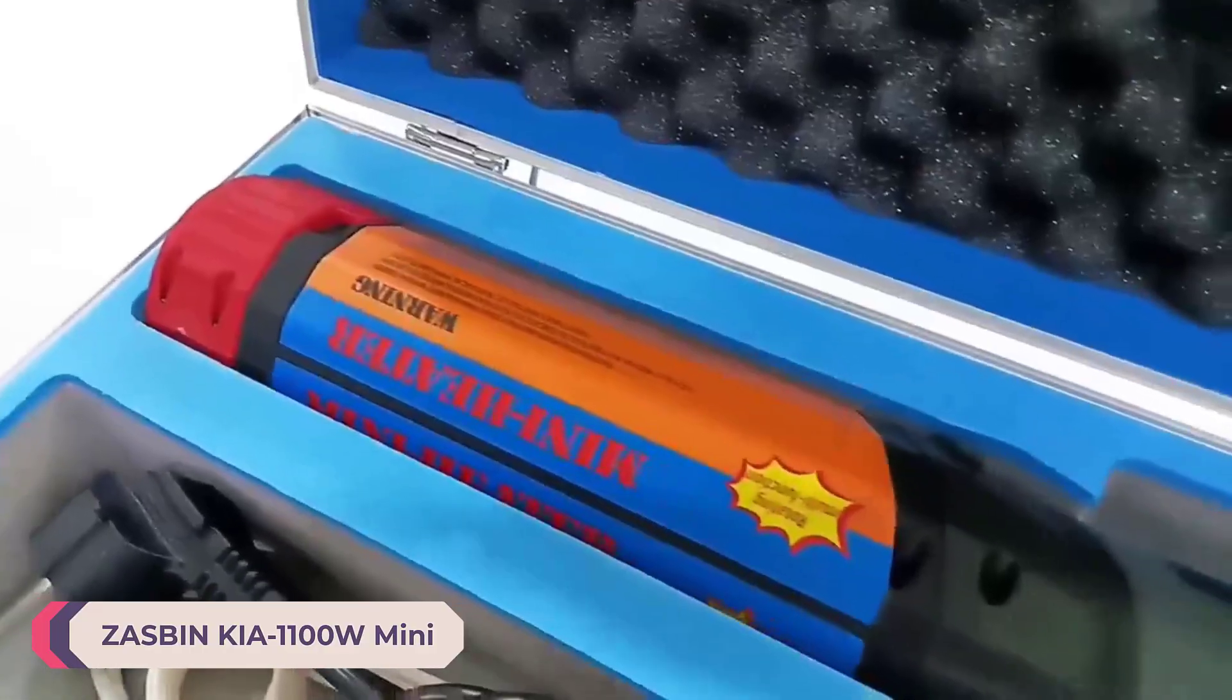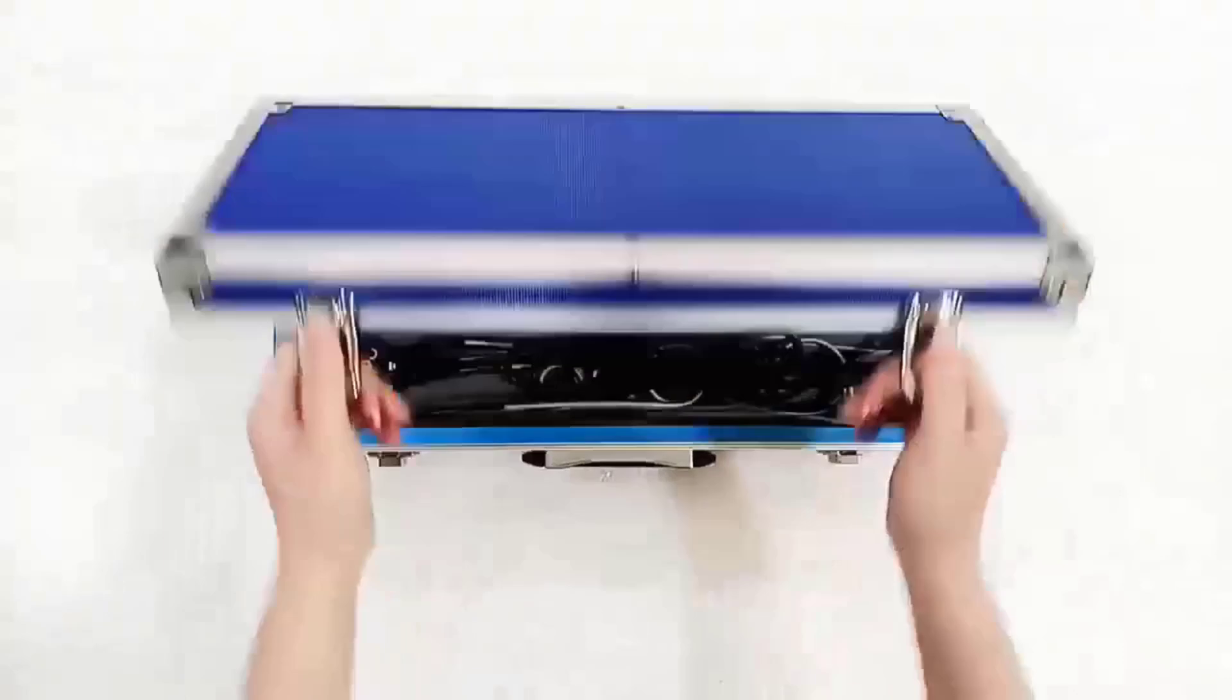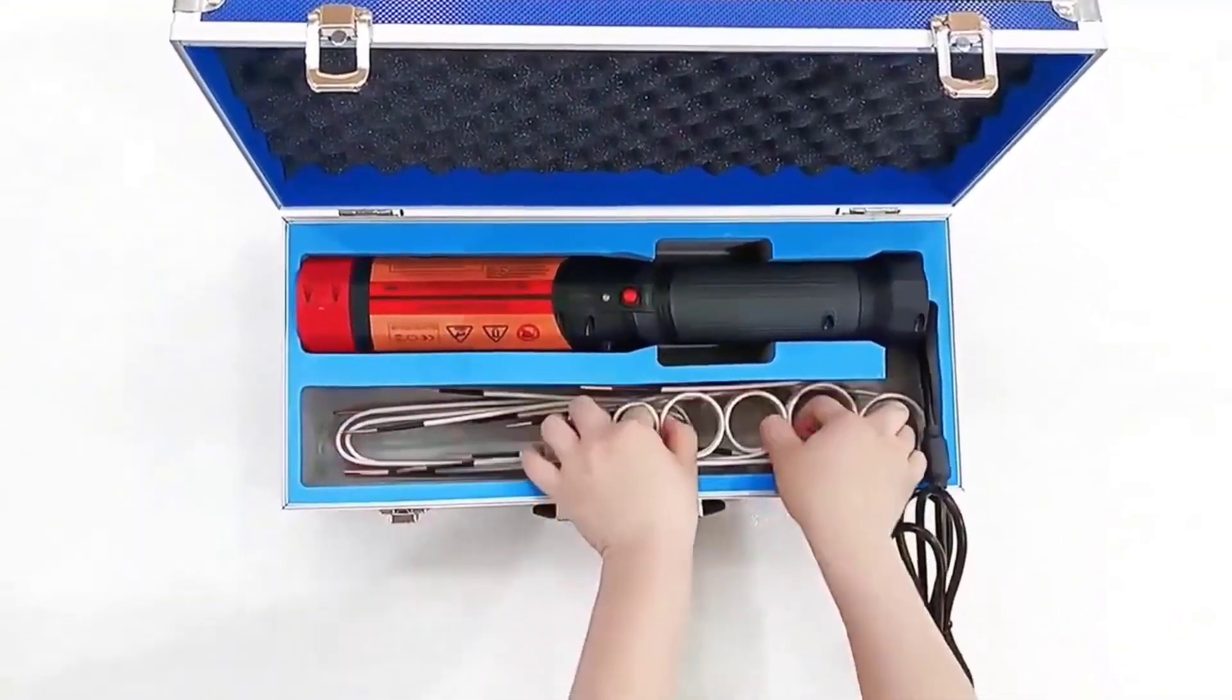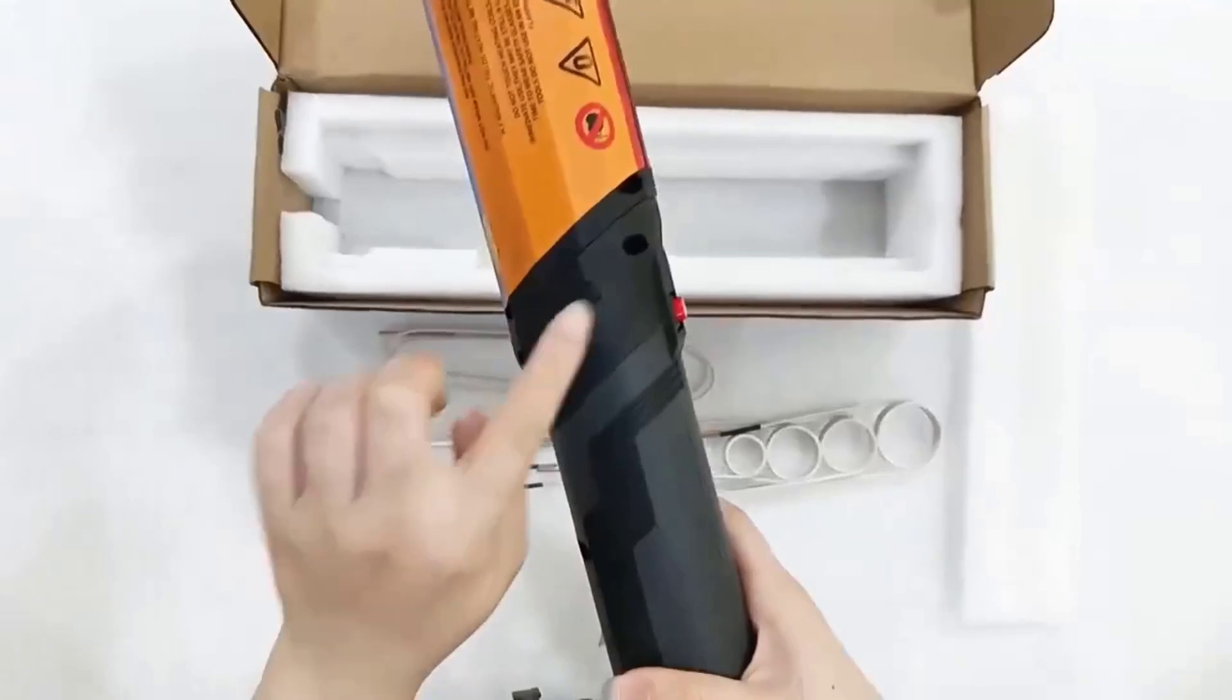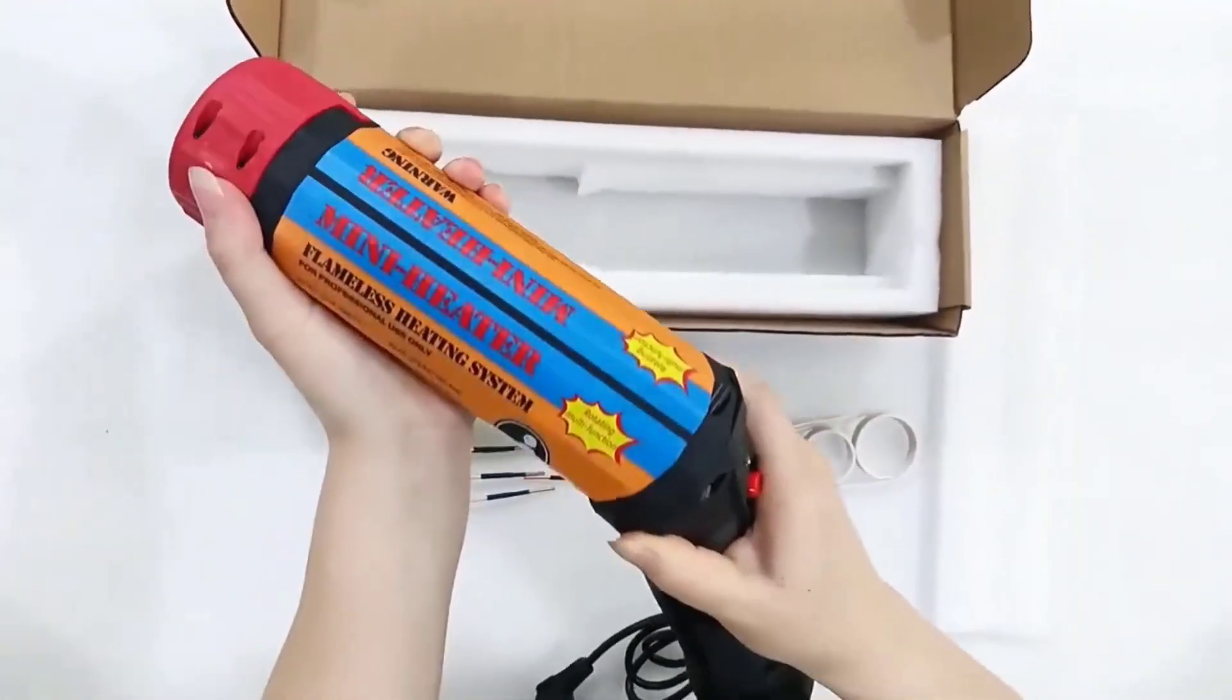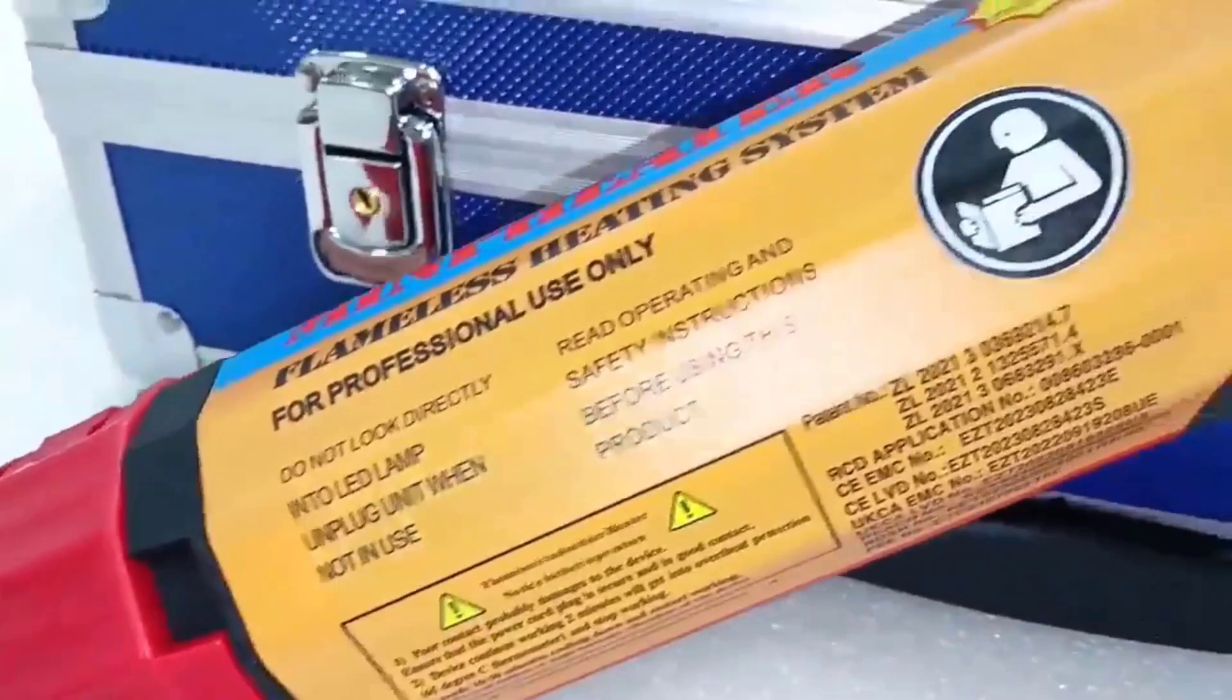Number 1: Zaspin Kia 1100W Mini Magnetic Induction Heater. The Zaspin Kia 1100W Mini Magnetic Induction Heater, with a powerful 1500W output, is a compact and efficient tool for car repair and DIY tasks. Ideal for removing bolts and nuts, it offers a flameless, safe heating solution that protects surrounding components. The inclusion of 8-10 coils provides versatility for various applications.